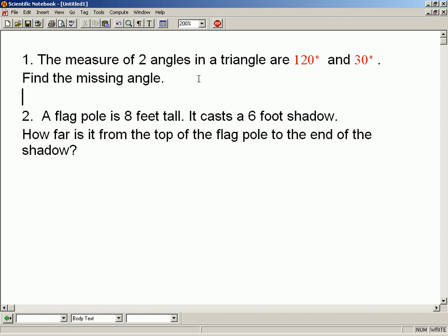The measure of two angles in a triangle are 120 degrees and 30 degrees. Find the missing angle.